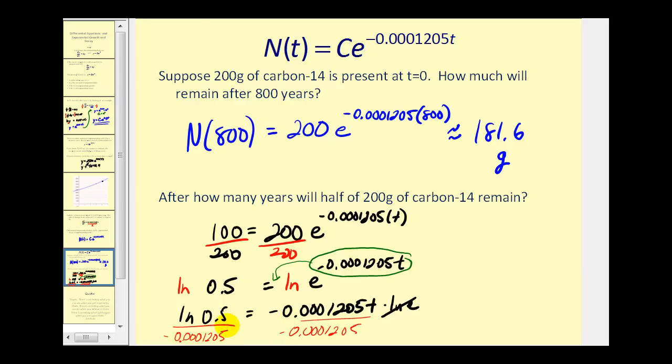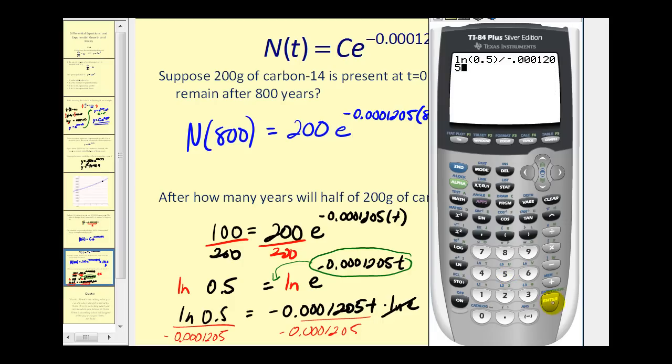Let's go back to the calculator one more time. We're going to have natural log 0.5 divided by negative 0.0001205. And it looks like it's roughly 5,752.3 years.